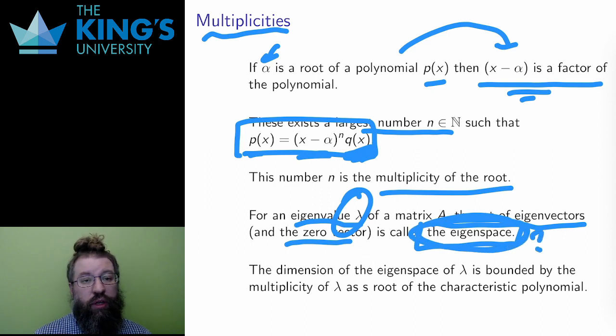For each eigenvalue, each number lambda, how many vectors are scaled by this number? Well, this is where the multiplicity comes in. The multiplicity of lambda as a root of the characteristic polynomial is the maximum dimension of the eigenspace. These multiplicities give an idea of how many eigenvectors are possible.